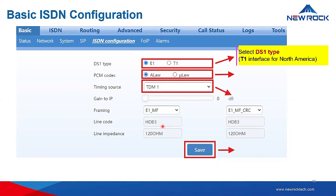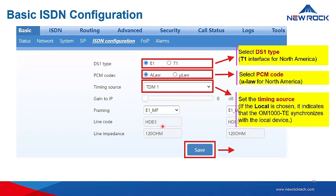For PCM codec, use A-law. U-law is used for North America. Timing source is very important for clock synchronization. You can set it to TDM1, which means the clock is synchronized to the opposite device. If set to local, it indicates that the trunking gateway synchronizes with the local device. Click save.